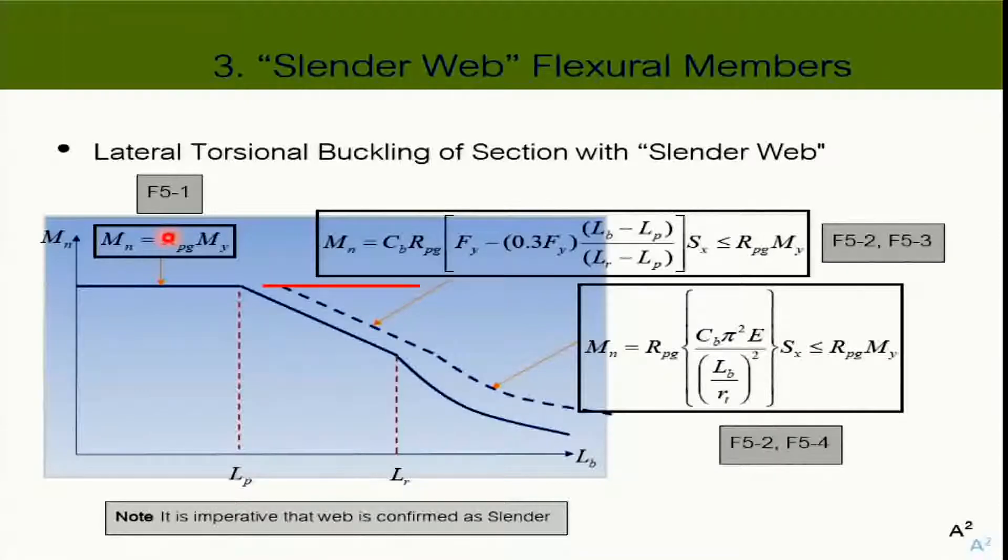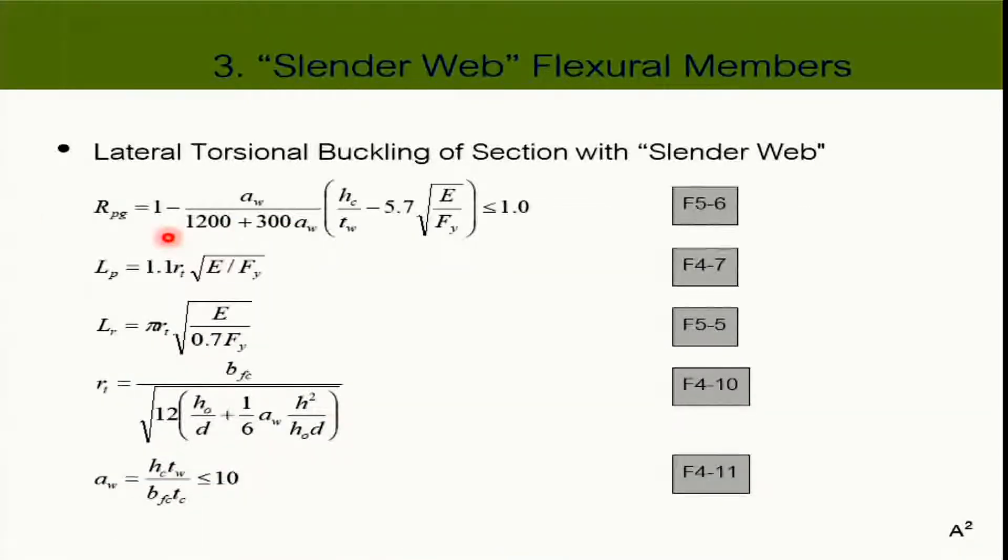Unlike Rpc before, for the slender web, Rpg should generally be less than 1. It cannot be greater than 1, because that means you increase the strength of the beam. And this is the very very old formula. The Rpg is like this. And if you can recall, this is the limit, lambda R, for the web. So that means if you have a plate girder, the slenderness ratio of your web should always be greater than 5.7 square root E over Fy.